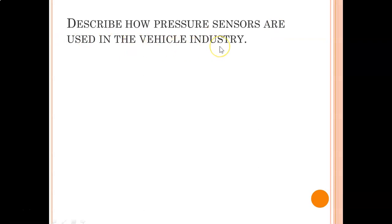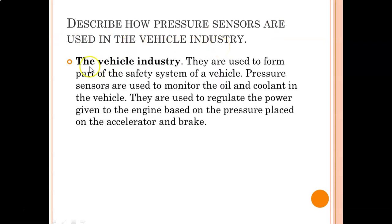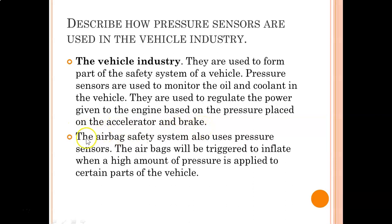Describe how pressure sensors are used in the vehicle industry. They are used to form part of the safety system of a vehicle. Pressure sensors are used to monitor the oil and the coolant in the vehicle. They are used to regulate the power given to the engine based on the pressure placed on the accelerator and brake. They are also used in the airbag safety system.